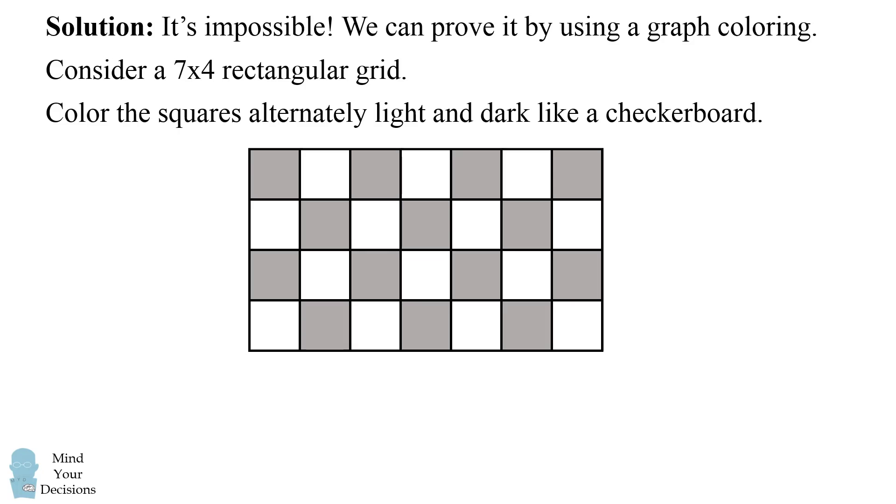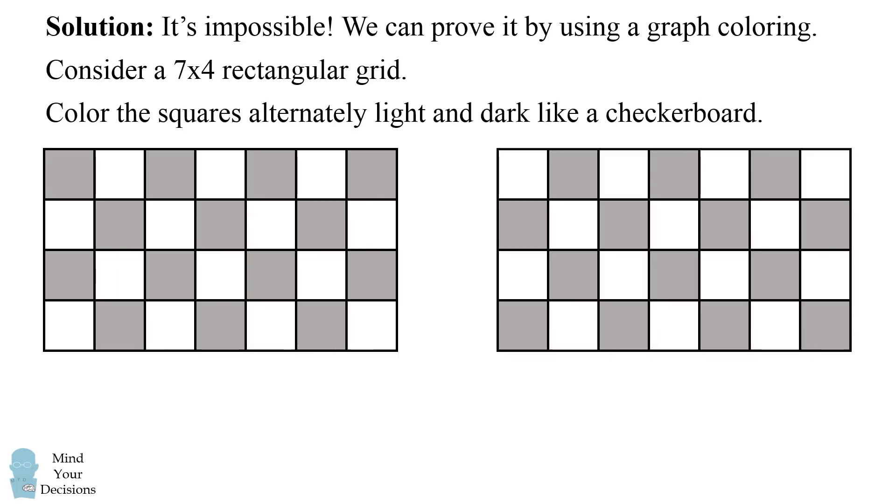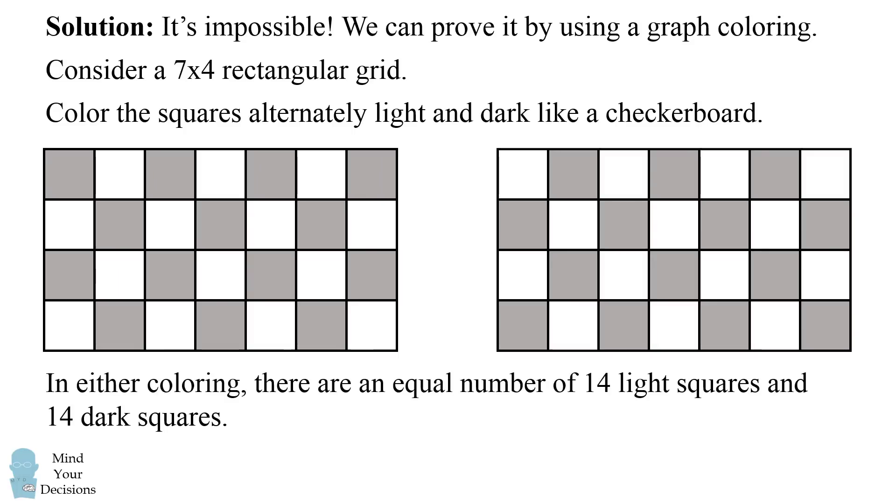Color the squares alternately light and dark like a checkerboard. This is one way you could color the squares, but this is not the only way. You could actually color the squares in another pattern. But in either case there are an equal number of 14 light squares and 14 dark squares.